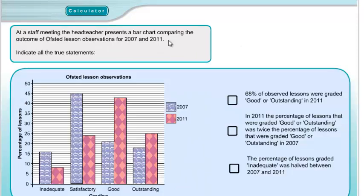Question 3. At a staff meeting, the head teacher presents a bar chart comparing Ofsted observation outcomes for 2007 and 2011. We need to indicate all the true statements. Statement 1: 68% of observed lessons were graded good or outstanding in 2011. The 2011 data is the purple bars. Adding the good (43%) and outstanding (25%) categories together gives 68%. So that is a true statement.